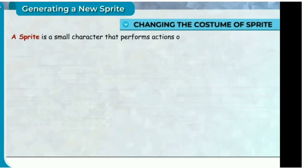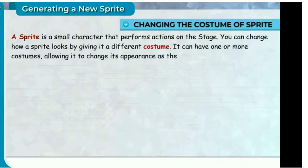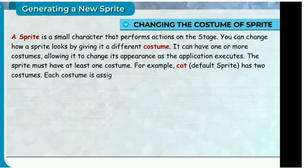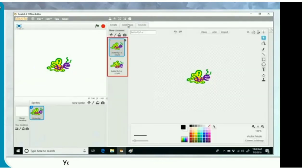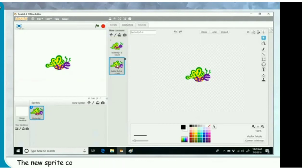Changing the costume of a sprite. A sprite is a smart character that performs actions on the stage. You can change how a sprite looks by giving it a different costume. It can have one or more costumes, allowing it to change its appearance as the application executes. The sprite must have at least one costume — for example, the cat default sprite has two costumes. Each costume is assigned a unique name and number. In this example we have selected butterfly as a sprite — it also has two costumes. Click on the costumes tab. You will see butterfly 1a and butterfly 1b costumes. Click on butterfly 1b costume to apply it.